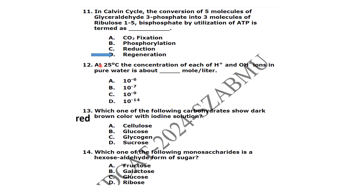At 25 degrees, the concentration of each hydrogen and hydroxide ions in pure water is about 10 to the minus 7 moles per liter.